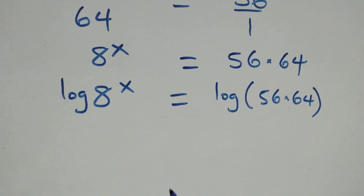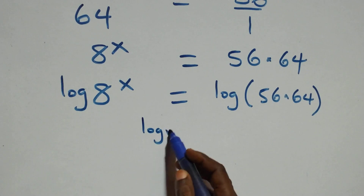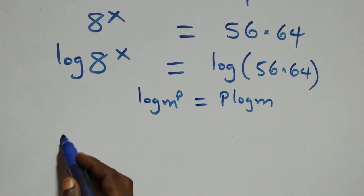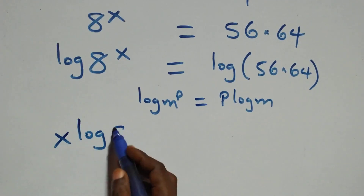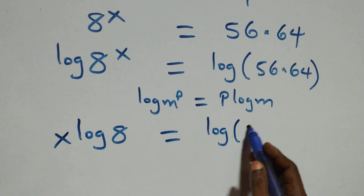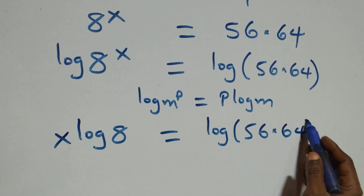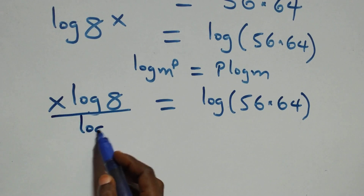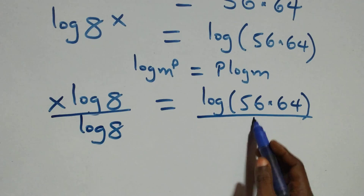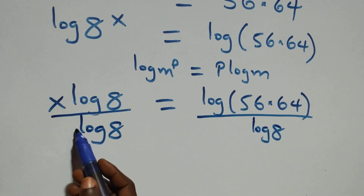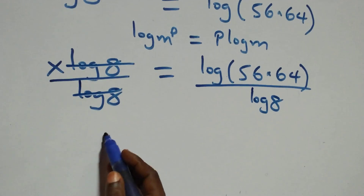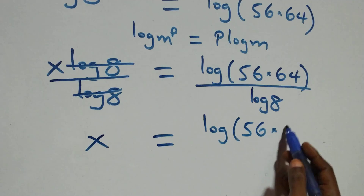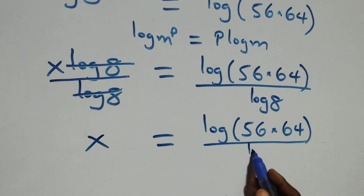Next step, we apply the power log rule. When we have log n raised to power p, it is the same thing as p times log n. So all we have becomes x times log 8 equals log of 56 times 64. From here we divide both sides by log 8 — log 8 cancels — and we have x equals log(56 times 64) over log 8.